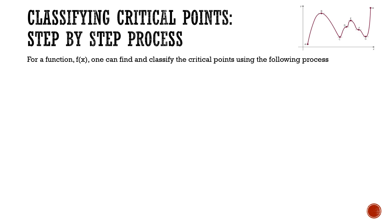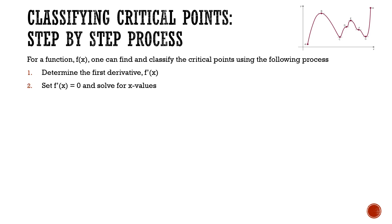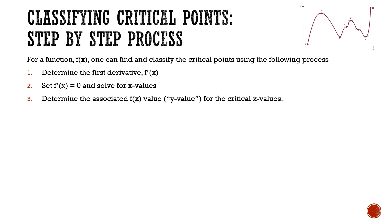In this video, we're going to talk about how to not only locate where the critical points are, but also how to determine whether it's a maximum, minimum, or a saddle point. To do this, we have a step-by-step process. For a function f of x, we find and classify the critical points as follows. First, we determine the first derivative, f prime of x. Then we set it equal to zero and solve for those associated x values. Once we have the x value for the critical point, we also need to determine its vertical value — the f of x or y value.